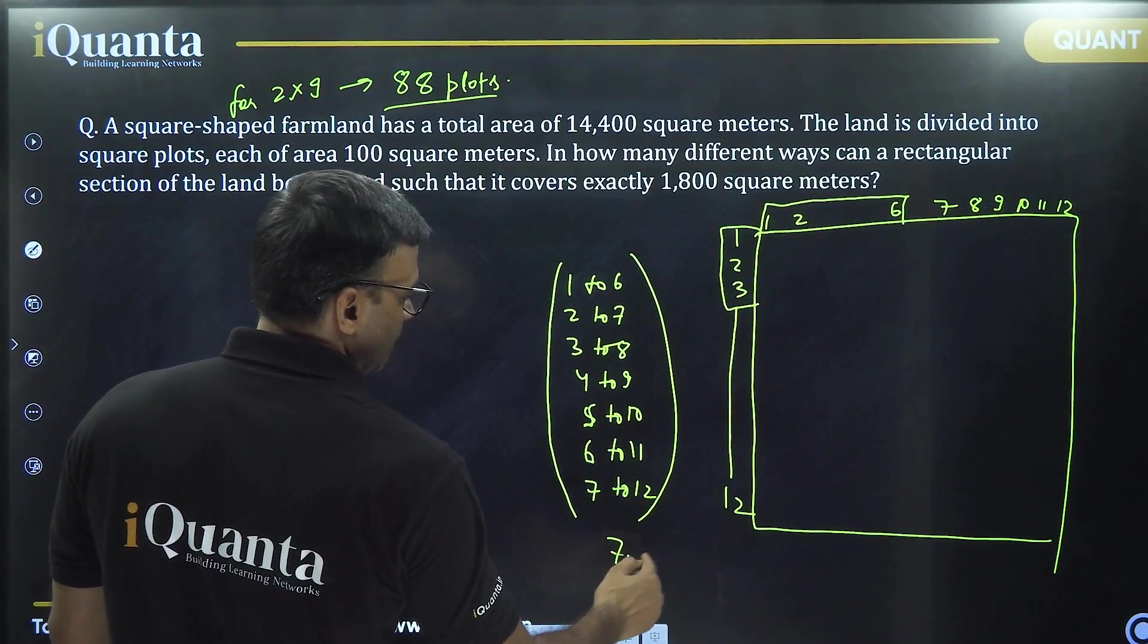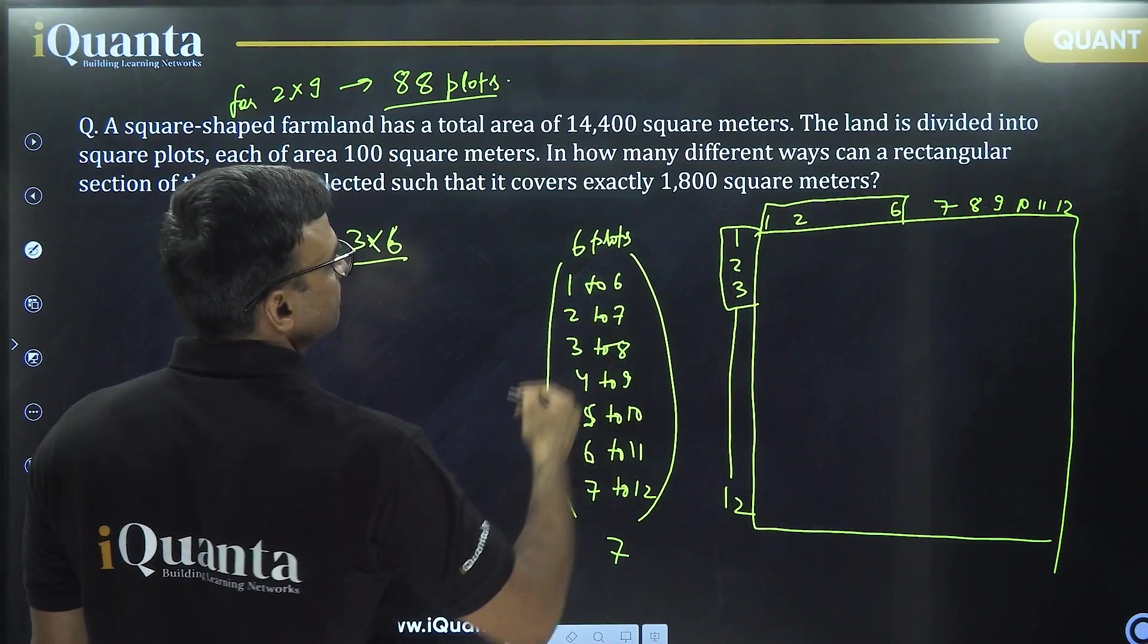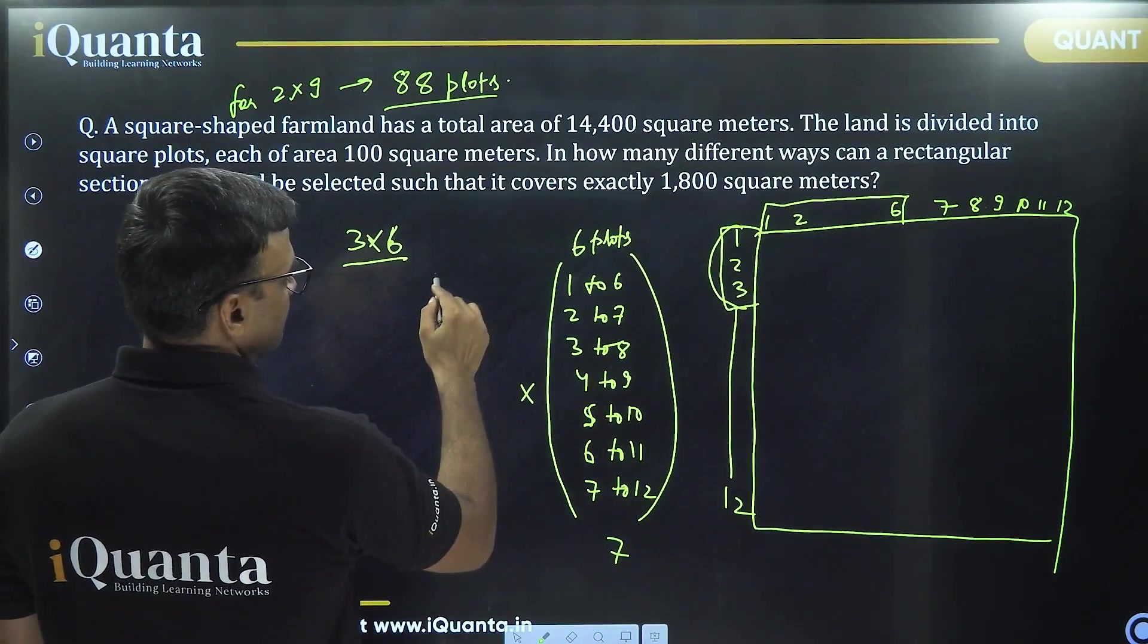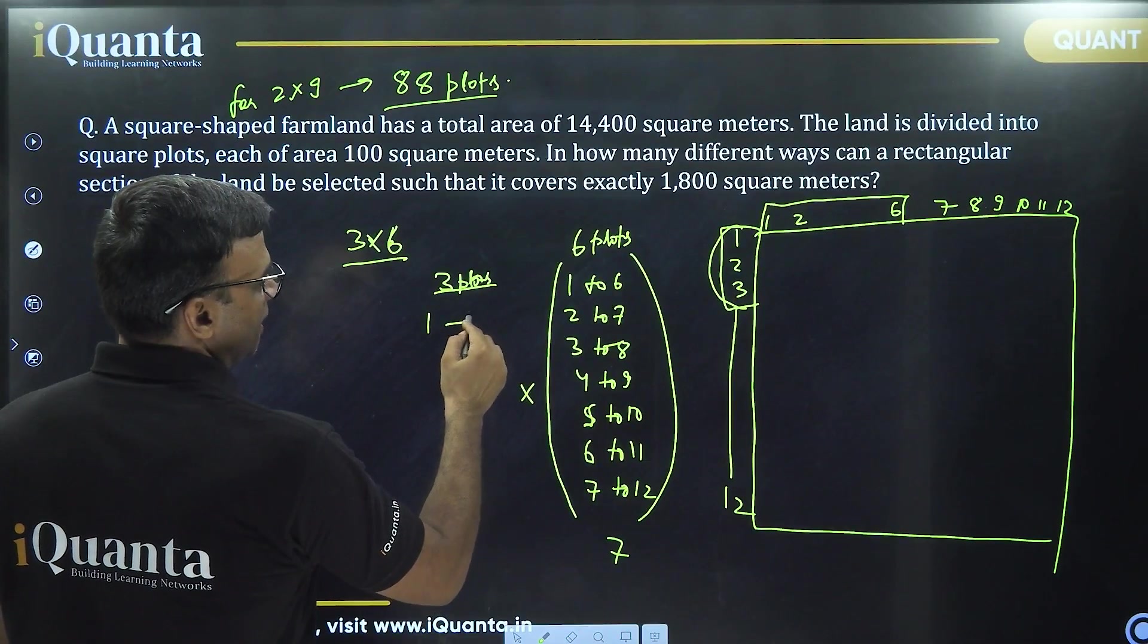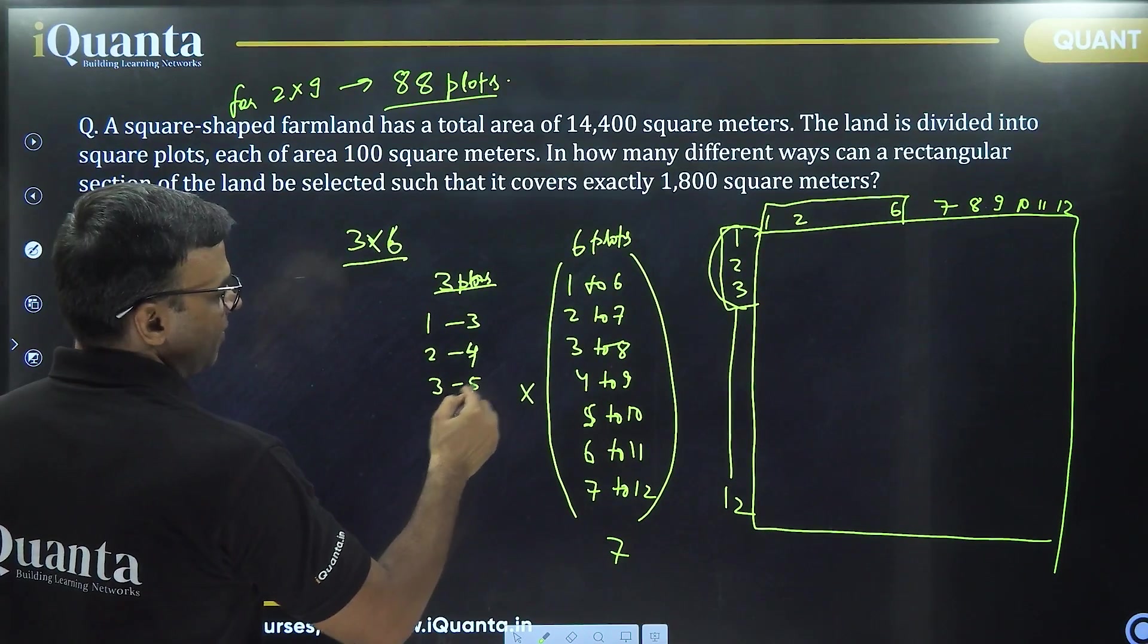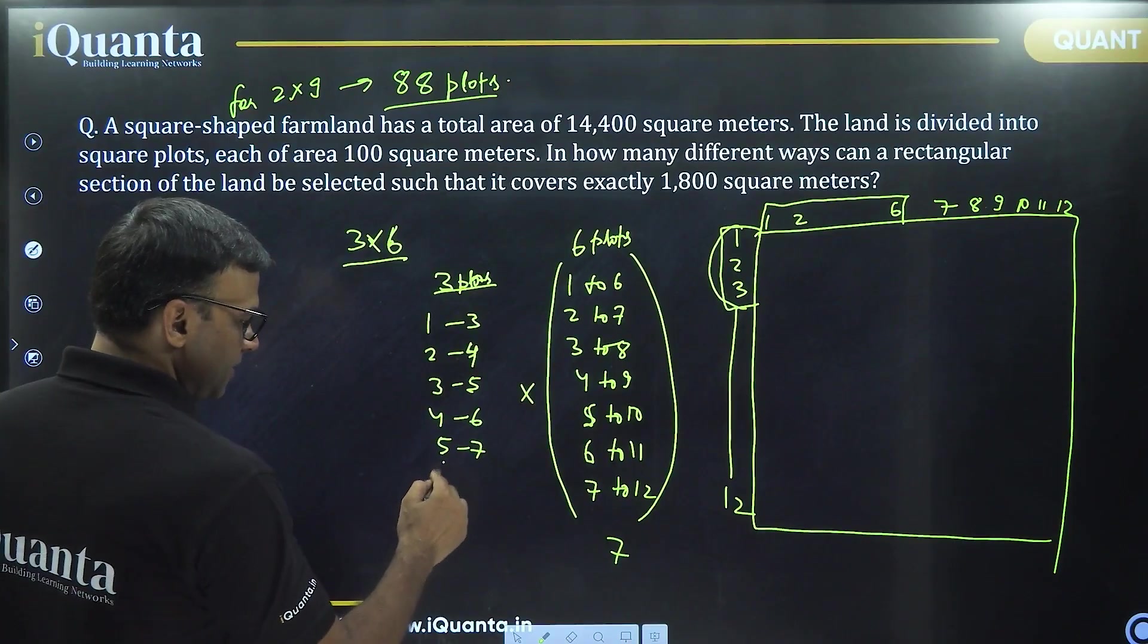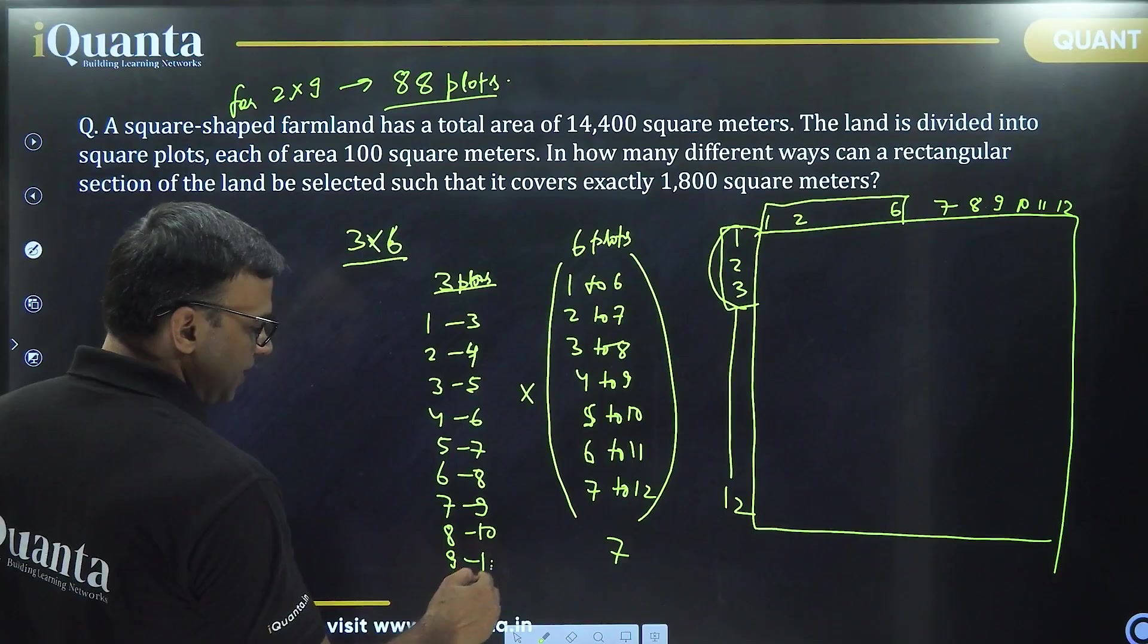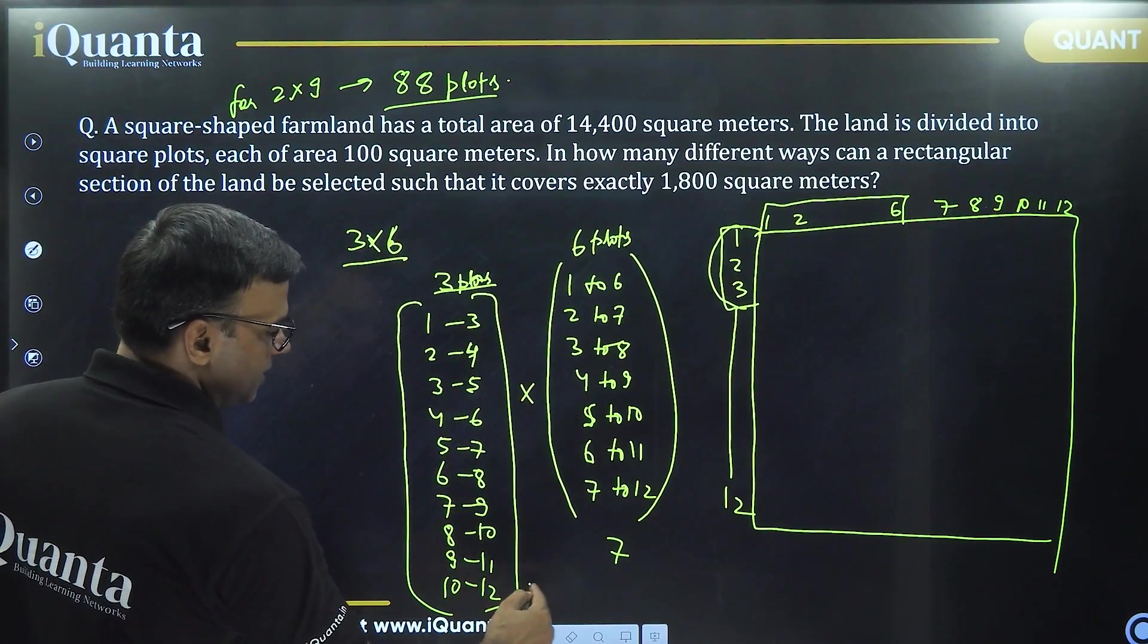Now I need to take 3 rows. So it could be 1 to 3, 2 to 4, 3 to 5, 4 to 6, 5 to 7, 6 to 8, 7 to 9, 8 to 10, 9 to 11, or 10 to 12. So 10 possibilities here.